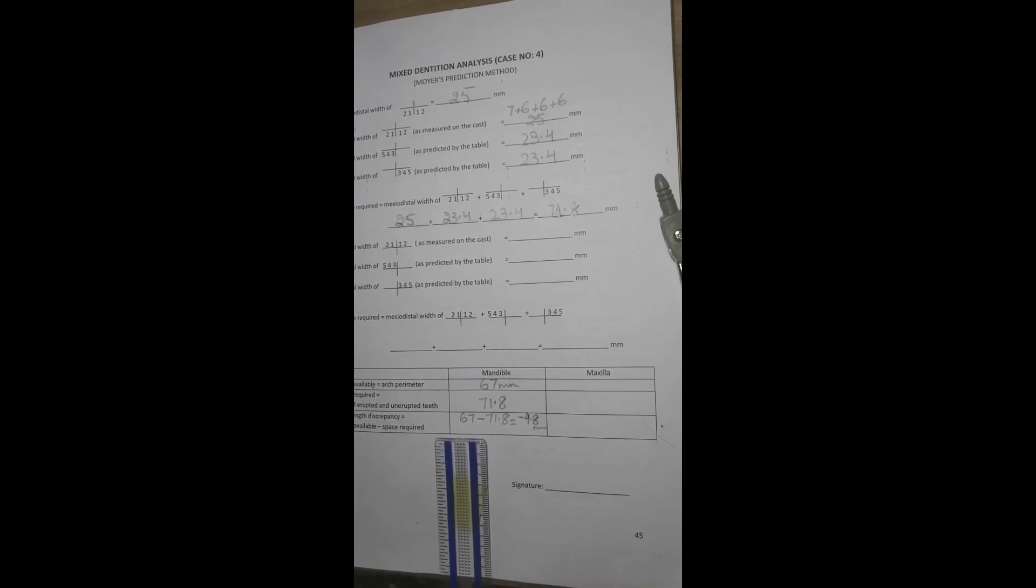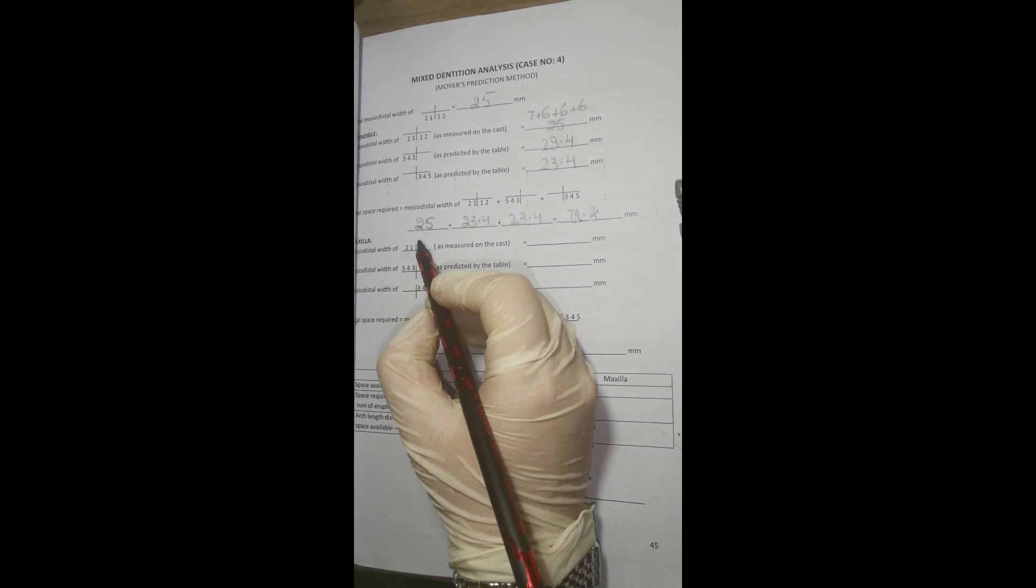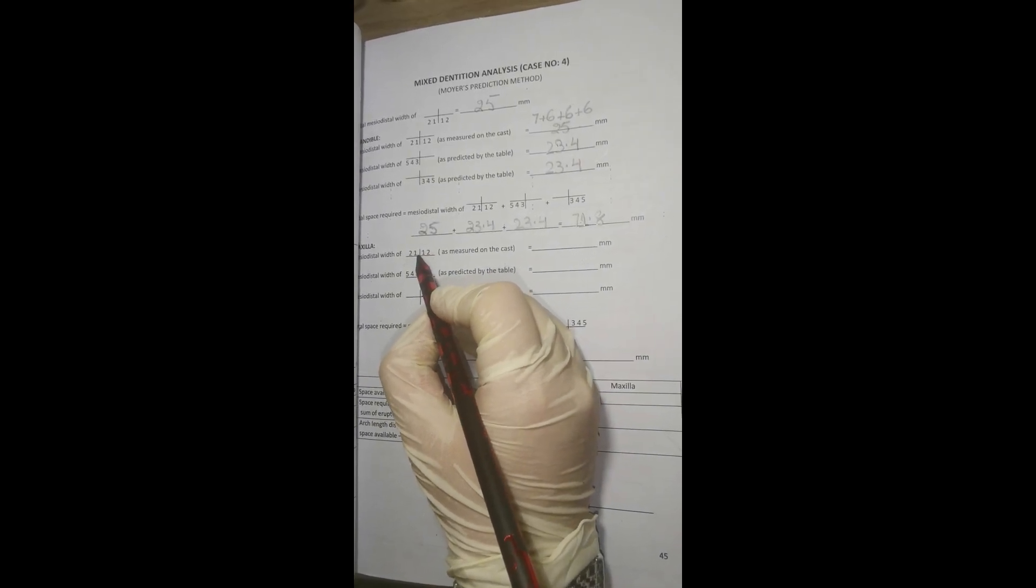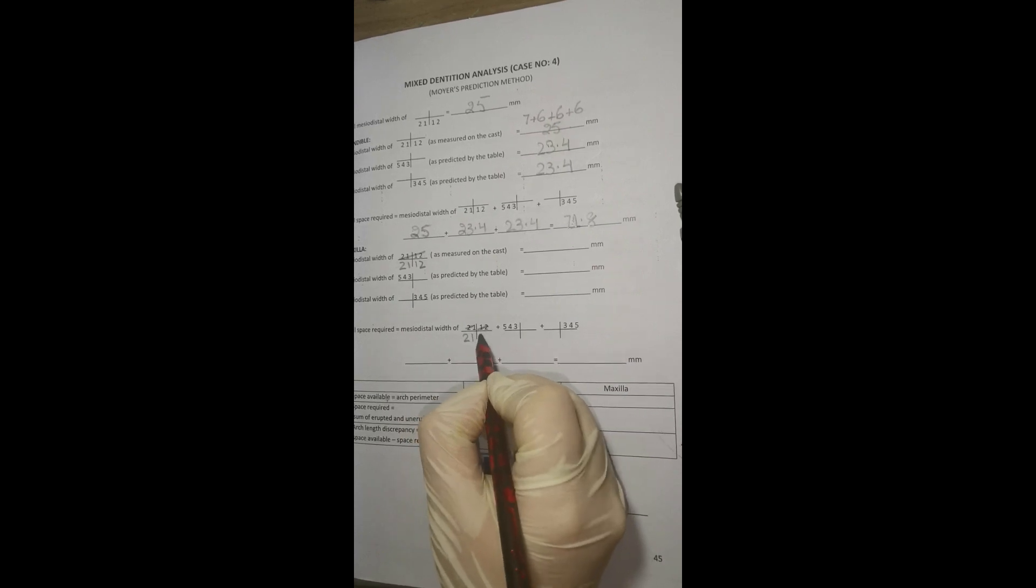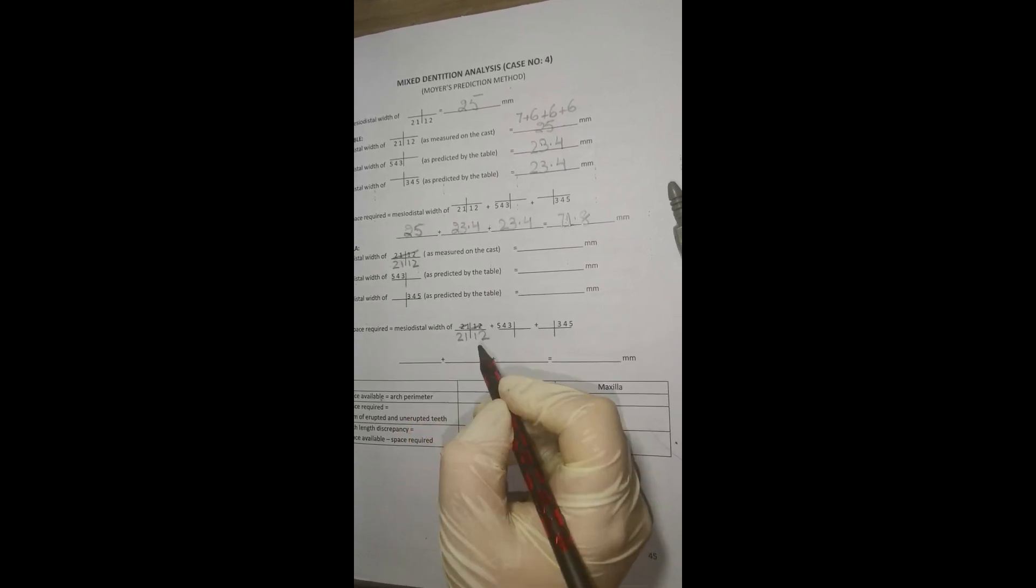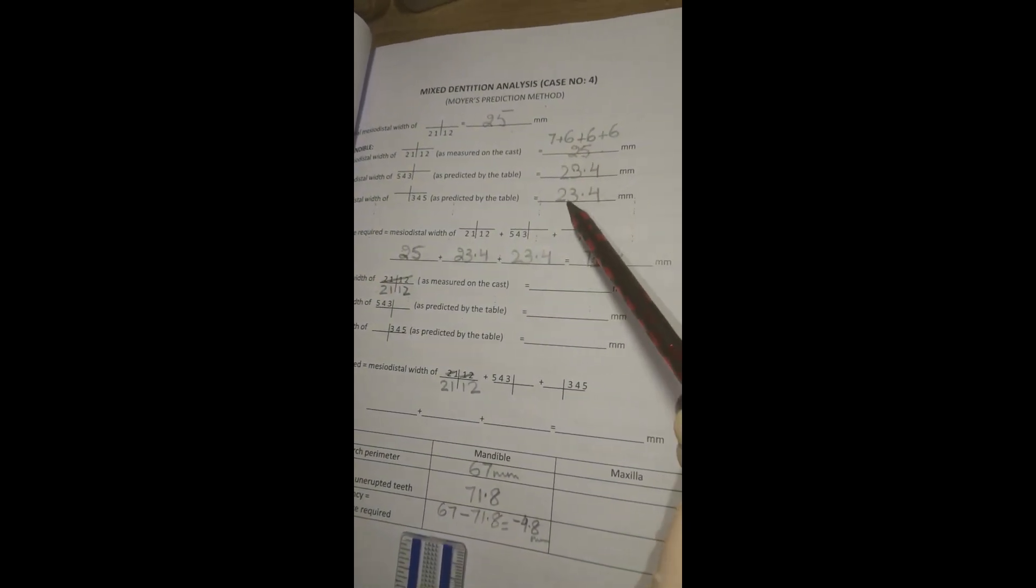For maxilla, same procedure is repeated. You have to make a correction in your logbooks. Instead of maxillary incisors, write down mandibular arch. Here and here. Remember, the width of lower incisors is used for prediction of both upper and lower canines and premolar teeth.